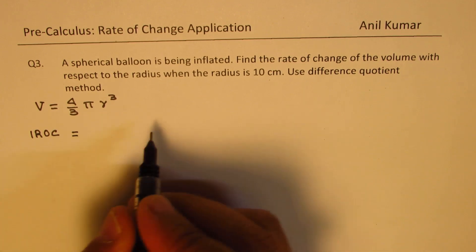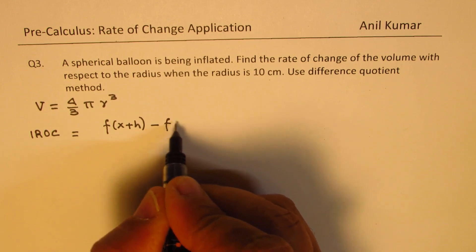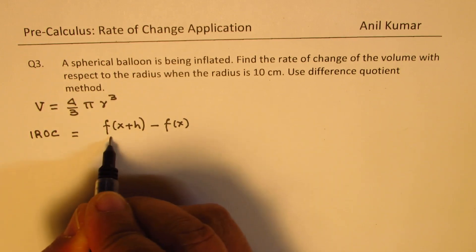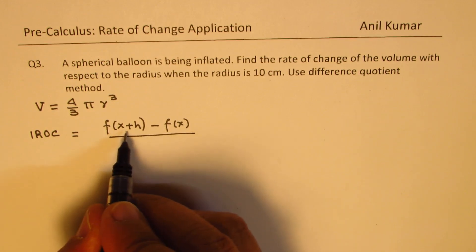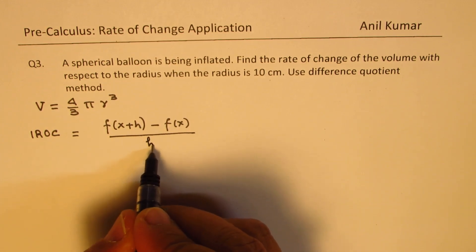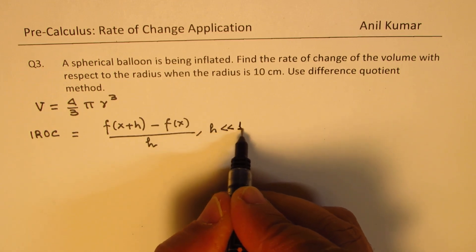Using difference quotient method it is f of x plus h minus f of x. That is the difference in the y values and difference in the x values will be x plus h minus x which is h. This is always applied when h is very small as compared to 1.